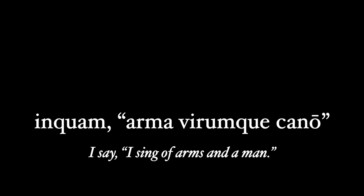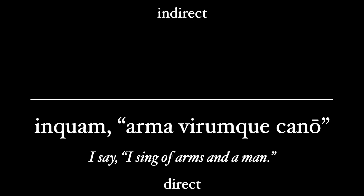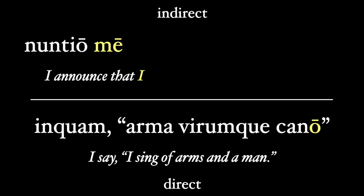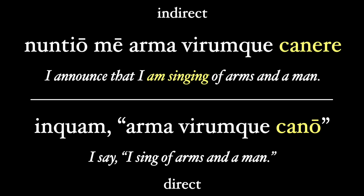Now let's turn that into an indirect statement introduced by nuntio, "I announce." First, we take the subject — an understood ego — and express it in the accusative case, so ego becomes me. Then the verb cano becomes the infinitive canere: "Nuntio me arma virumque canere" — I announce that I am singing of arms and a man.